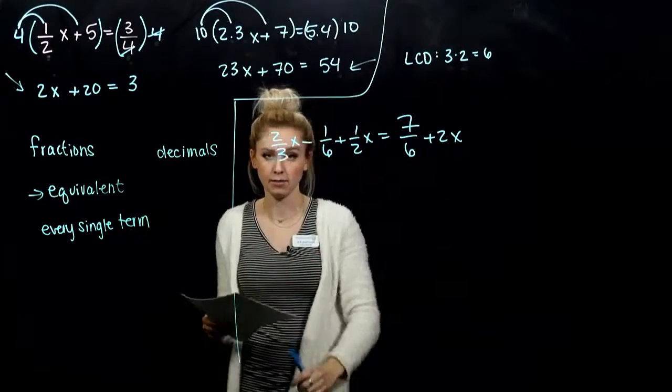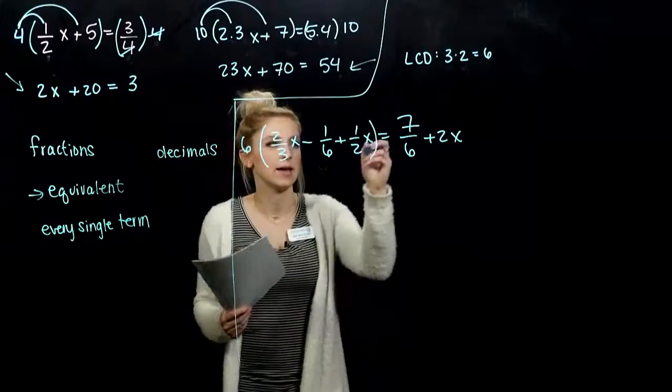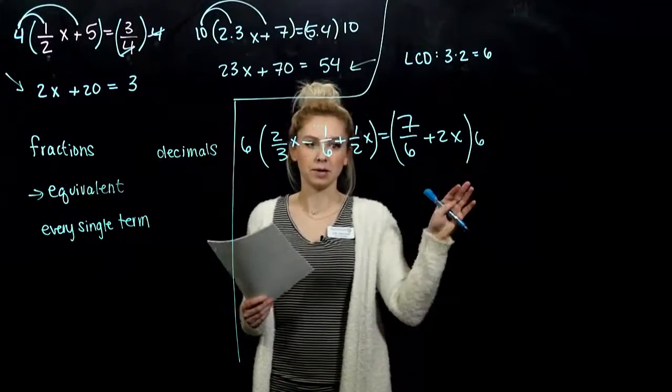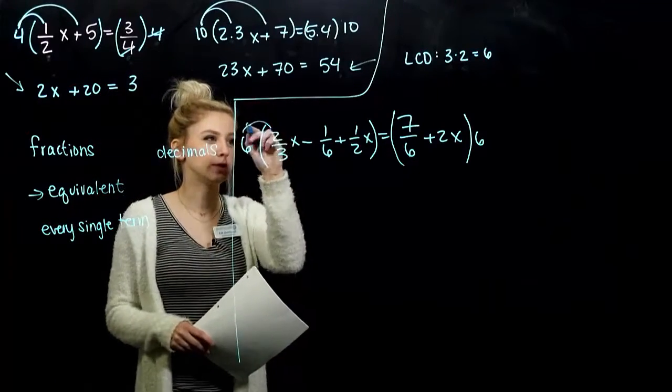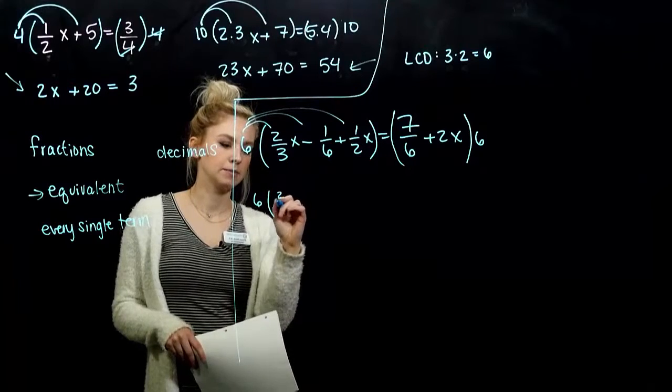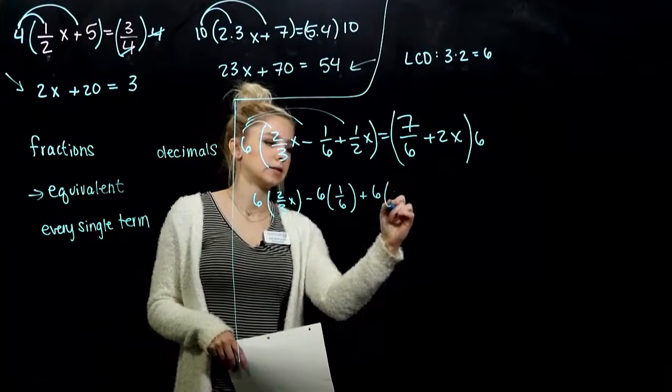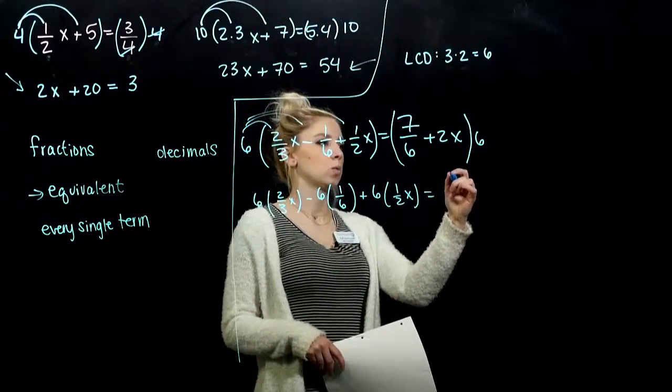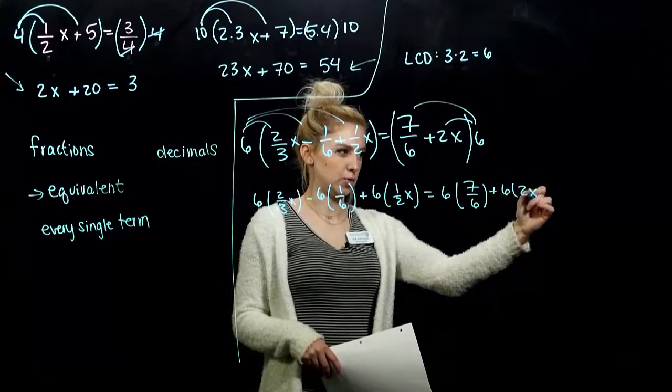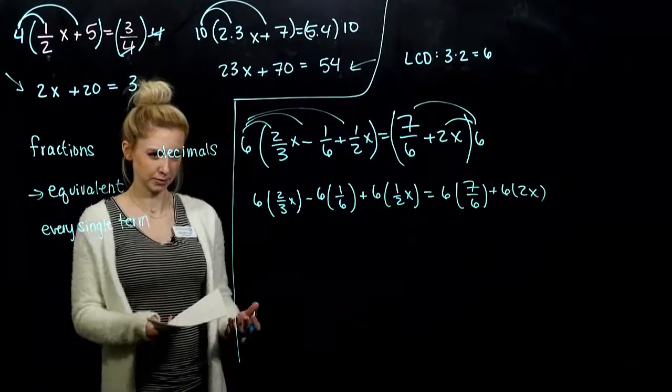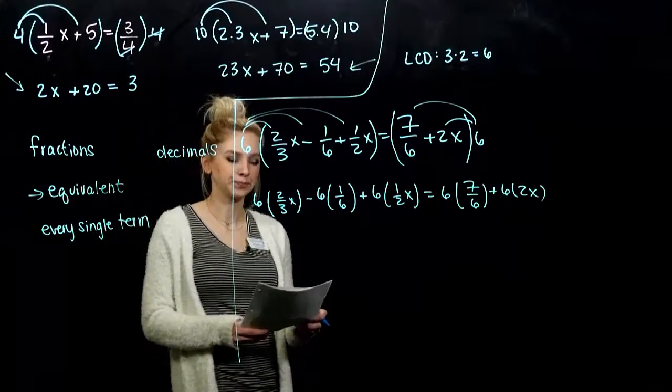And hopefully you can see that right off the bat. So again, if I multiply every single term, everything on the left by 6, everything on the right by 6, I'm going to clear out all of those fractions. So we need to distribute to each. So I have 6 times 2/3 x, minus 6 times 1/6, plus 6 times 1/2 x, equals, if I distribute over here, 6 times 7/6, 6 times 2x. Excuse me. So we want to simplify, make this look nicer.